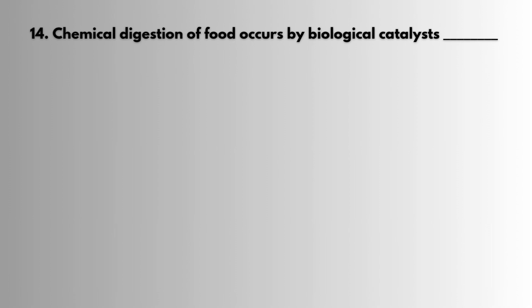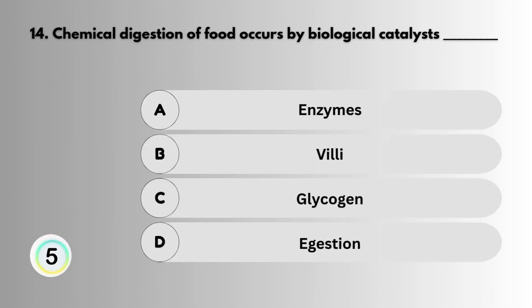Question 14: Chemical digestion of food occurs by biological catalysts dash. Answer: Enzymes.